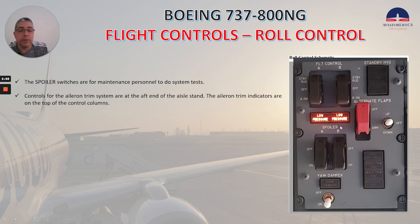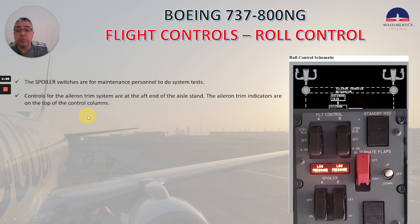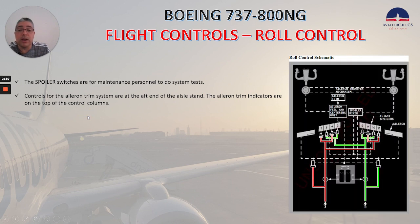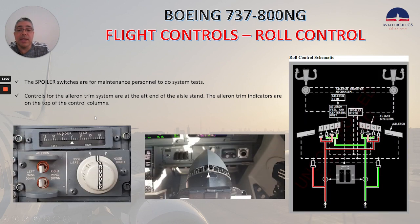The spoiler switches are for maintenance personnel to do system tests — you can see them here. Controls for the aileron trim system are at the aft end of the aisle stand. The aileron trim indicators are on the top of the control columns, and here you can see them.